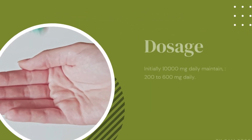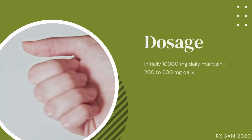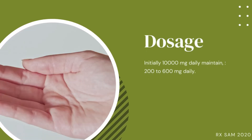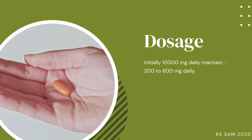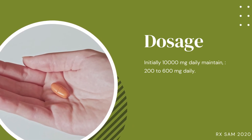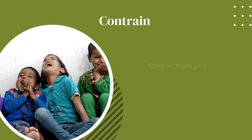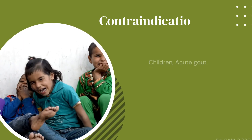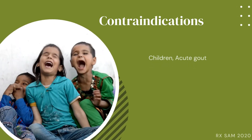Dosage: Initially 100 mg daily, maintenance 200–600 mg daily. Contraindications include children and acute gout.